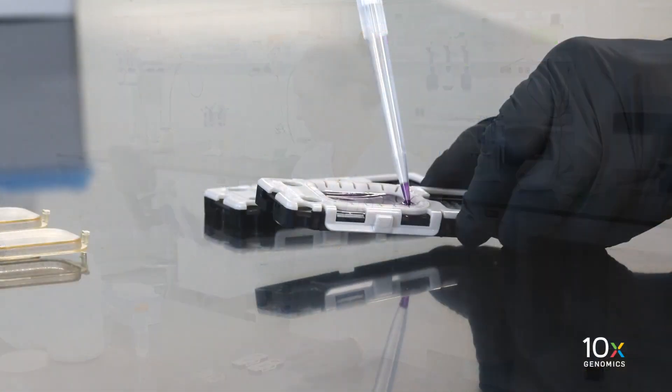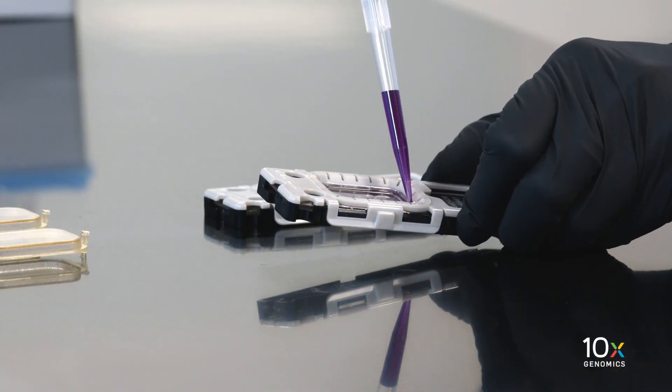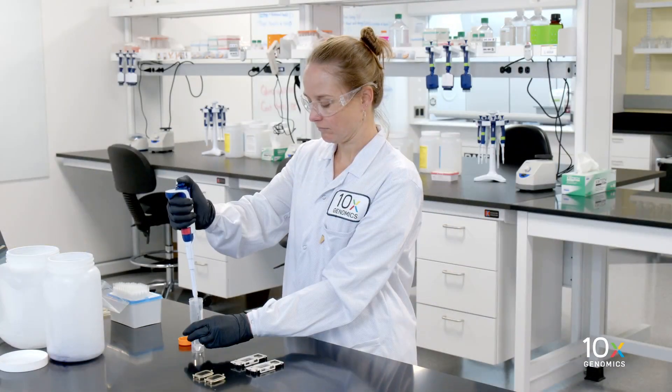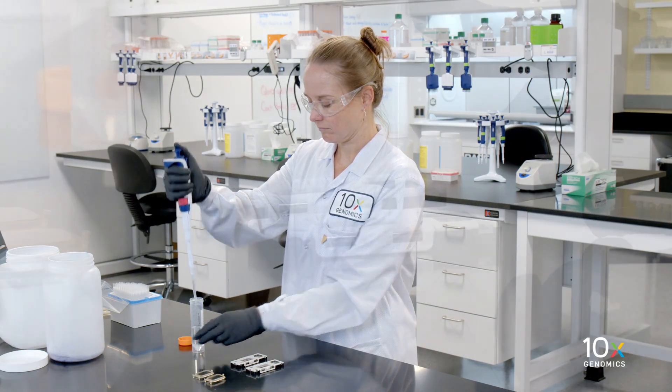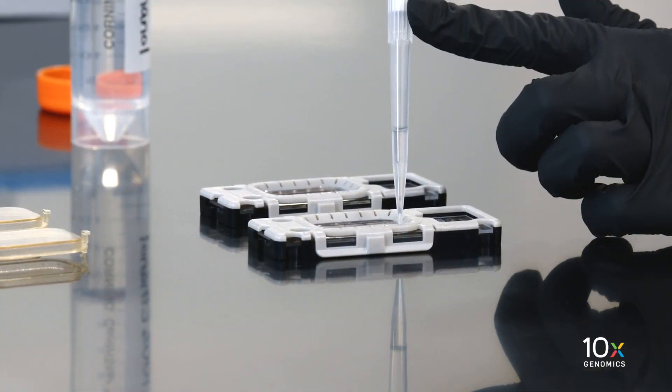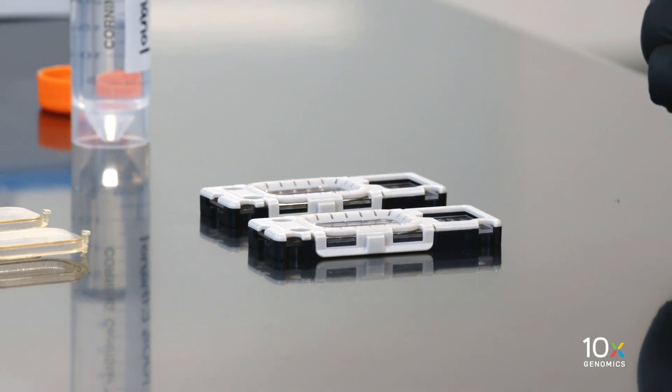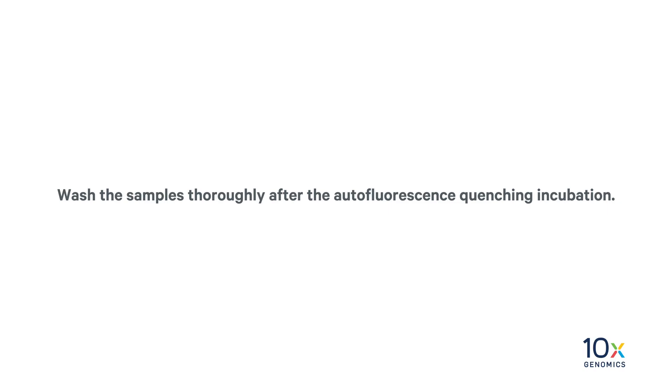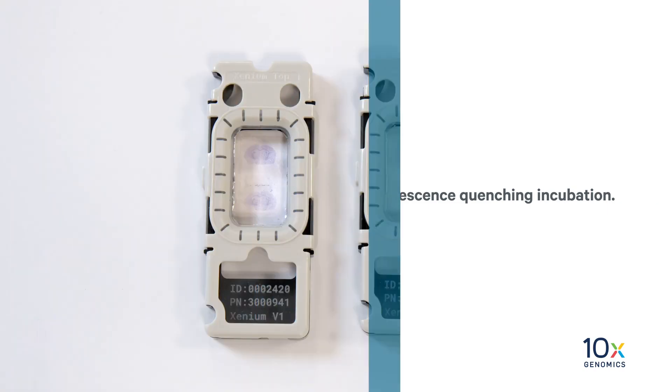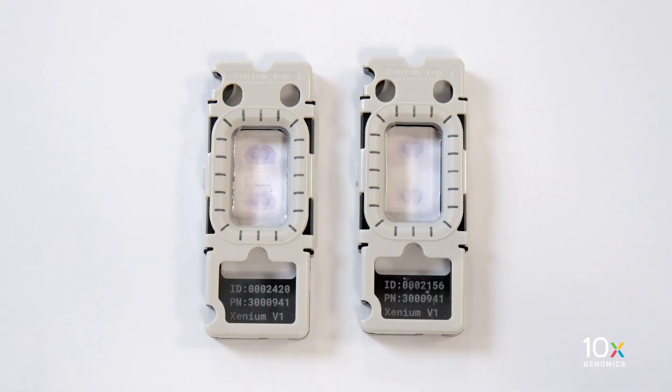After incubation, remove the quencher from the well. Wash the slide to remove any excess reagent. For this video, we will only perform a single wash. However, the protocol requires two additional washes. Wash samples thoroughly after the autofluorescence quenching incubation. A quenched sample shows a uniform light purple color on the tissue surface.